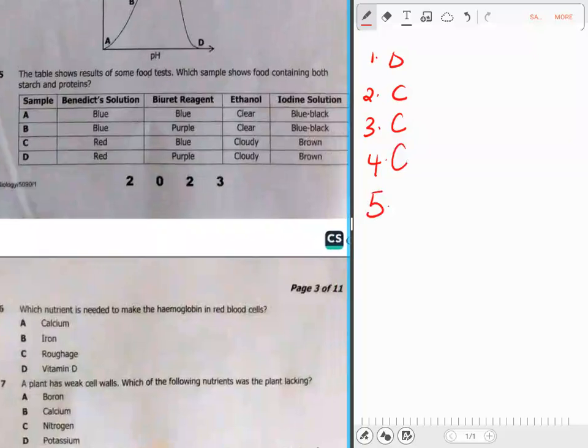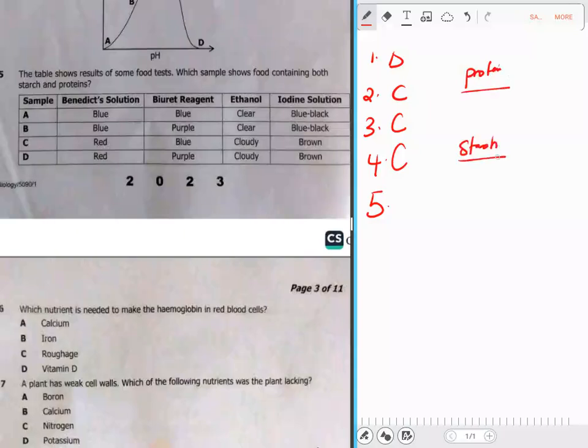Question 5: The table shows the results of some food tests. Which sample shows food containing both starch and proteins? When something contains proteins, what color does it show? And when something contains starch, what color does it show? When something contains proteins, it turns purple. But for starch, it's blue-black. For proteins we use the biuret reagent, and for starch we use iodine solution.